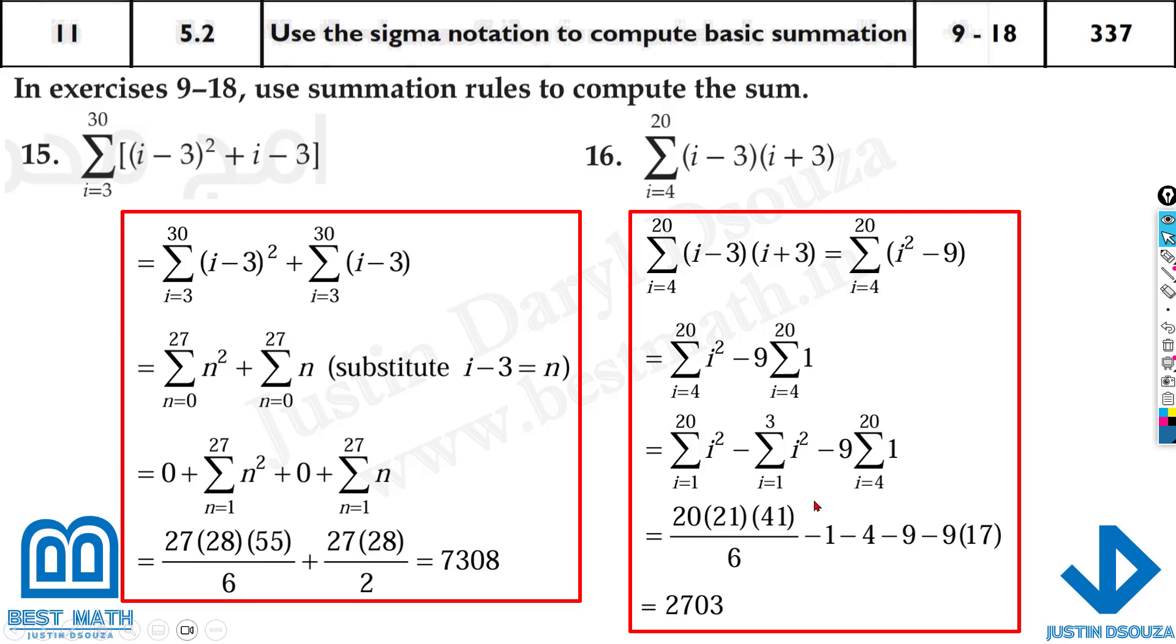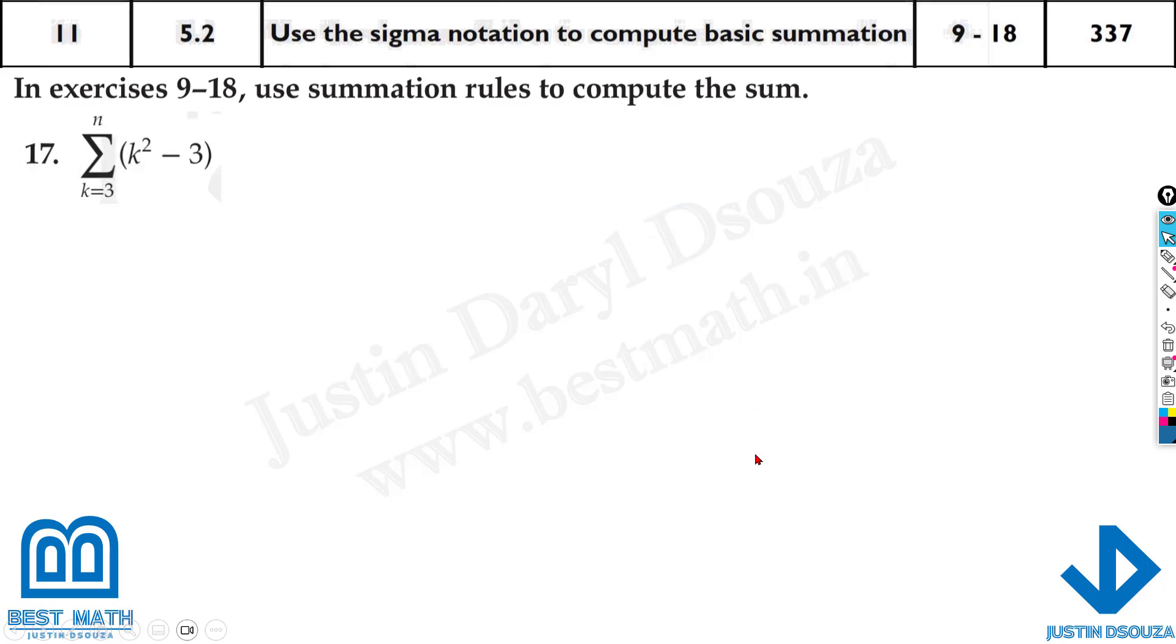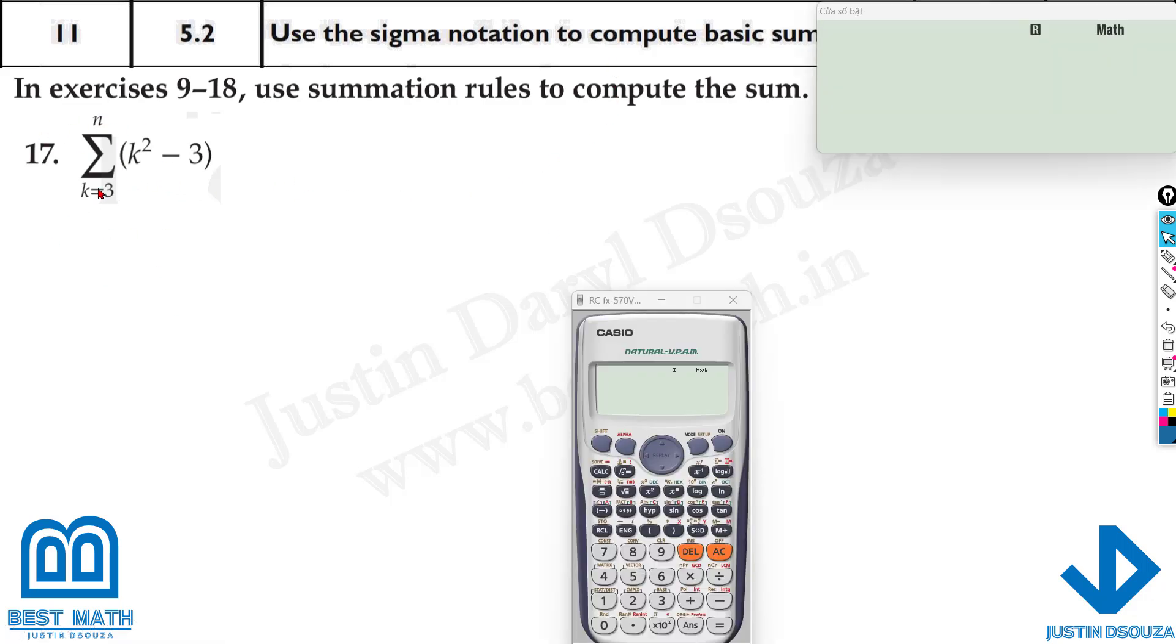Similarly you can solve all these problems. Here it starts from 4 to 20, just type it out and you'll get the answer. Now what about this problem here? It's n, isn't it? Here you don't need to solve it by writing, all you need to do is type it out so all the four options need to be available. Let's press shift and this symbol to get the summation. Now it's k but we use x squared minus 3, and the limit starts from 3 until n. Now what is n? I will just take a value of 10.